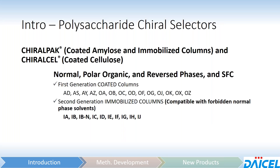The first generation coated phases — AD through OZ — are good for normal phase, polar organic mode, reversed phase, as well as SFC. Our second generation immobilized columns are compatible with those same mobile phases, in addition to what we call forbidden normal phase solvents or extended range solvents — things that contain dichloromethane and THF. Those would be IA through IJ.